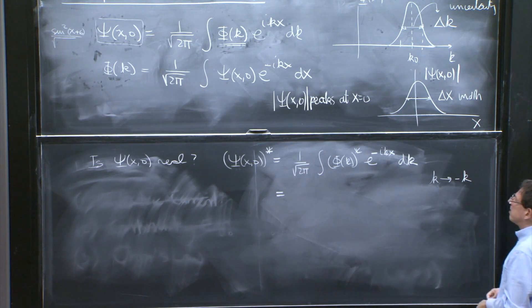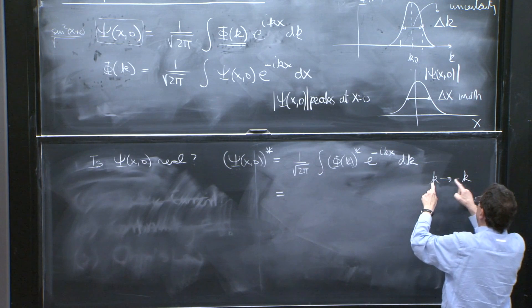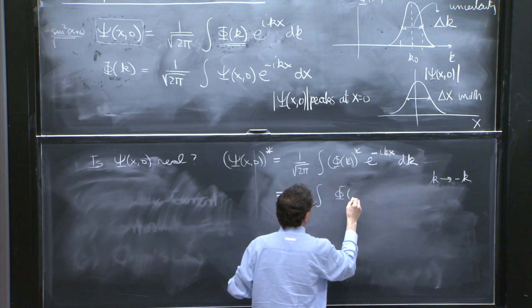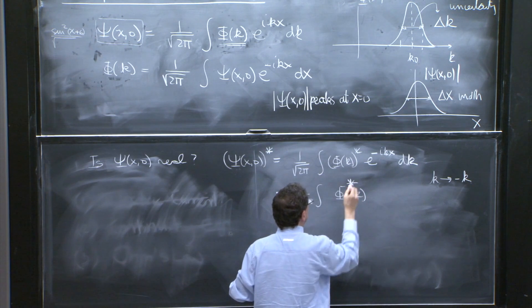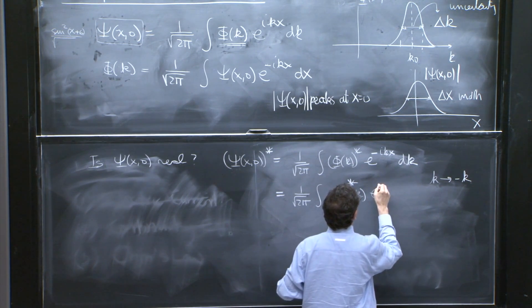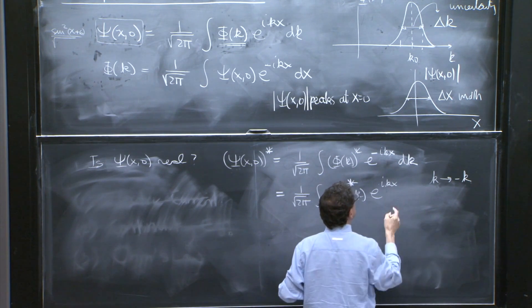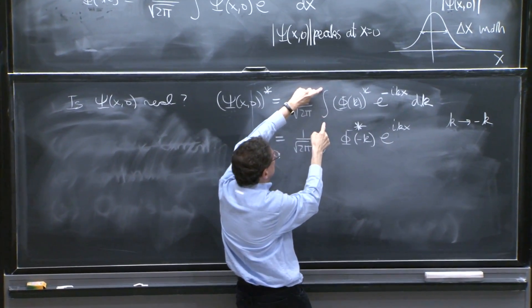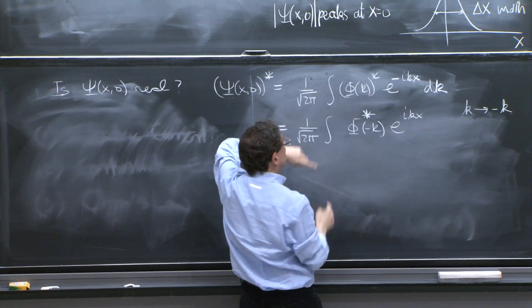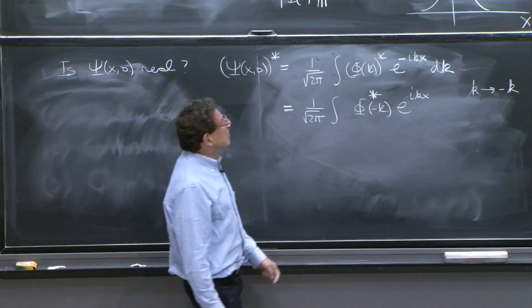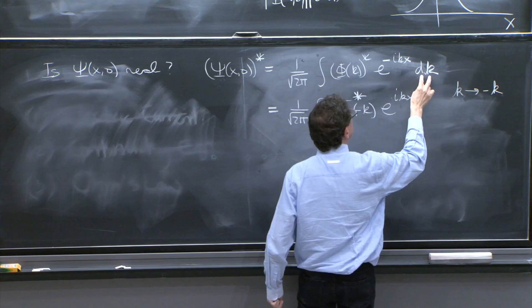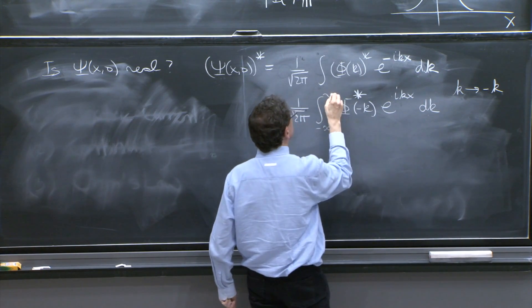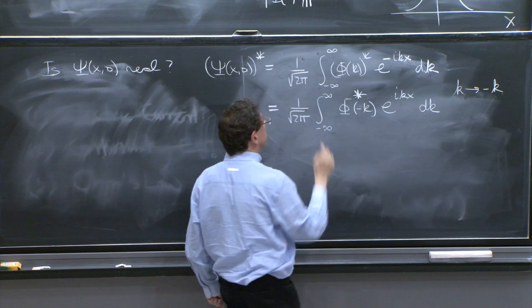There's going to be a couple of changes. Wherever you see k, you're now going to see minus k. So 1 over 2 pi integral phi of minus k star, e to the minus ikx becomes ikx, and the dk would go to minus dk. But the order of integration that was from minus infinity to plus infinity would switch, so those two signs cancel. There's a sign from doing dk to minus dk and one from the limit of integration. So at the end of the day, you have dk minus infinity to infinity.